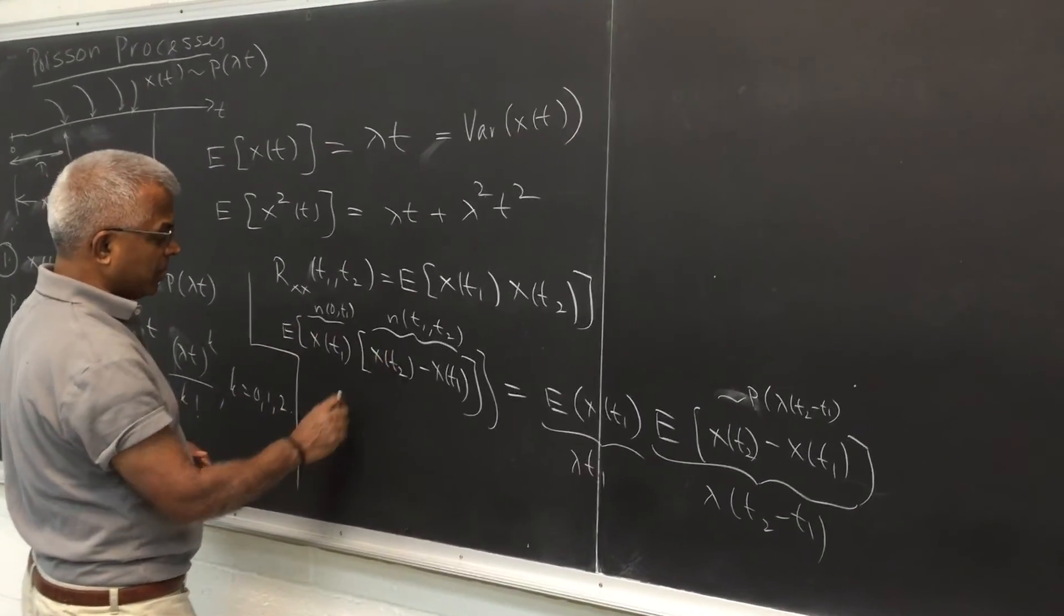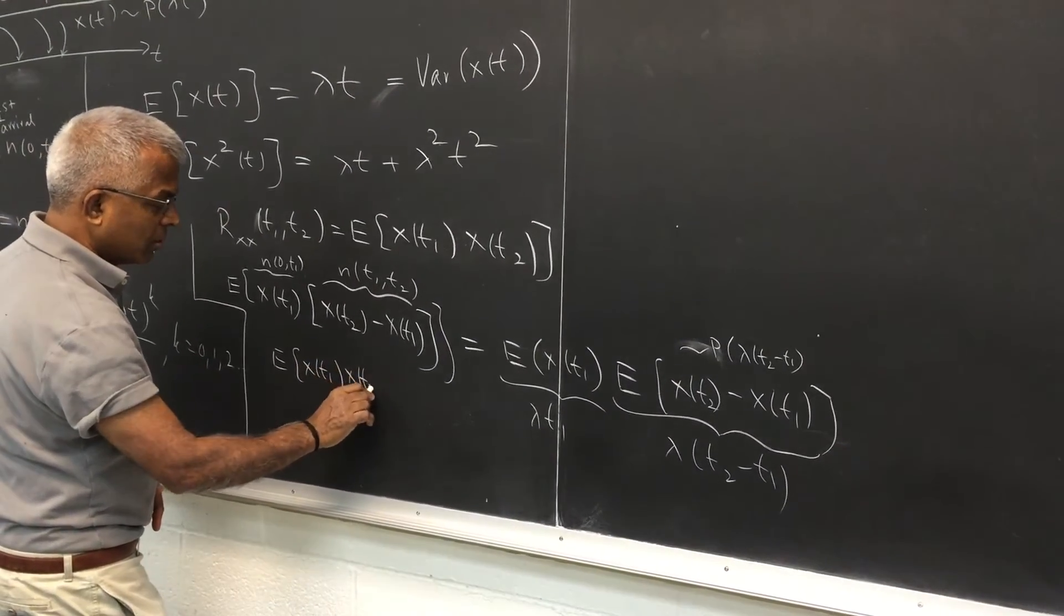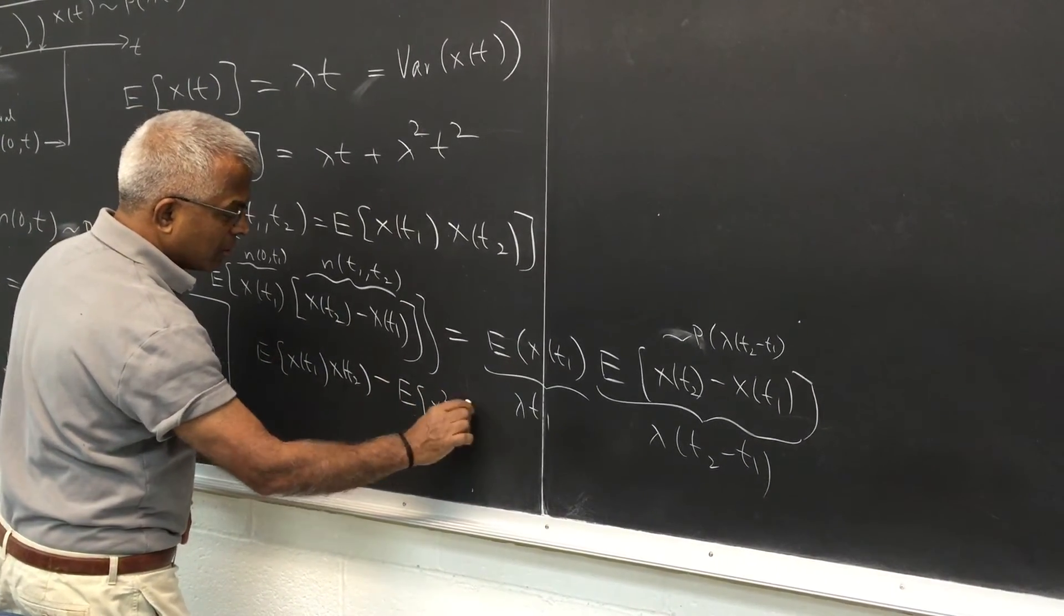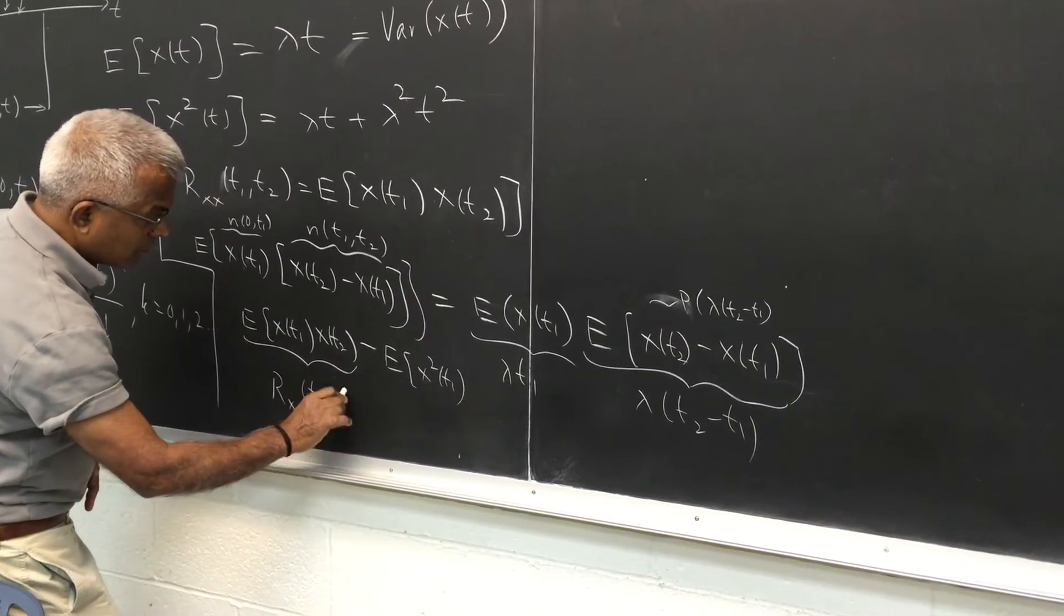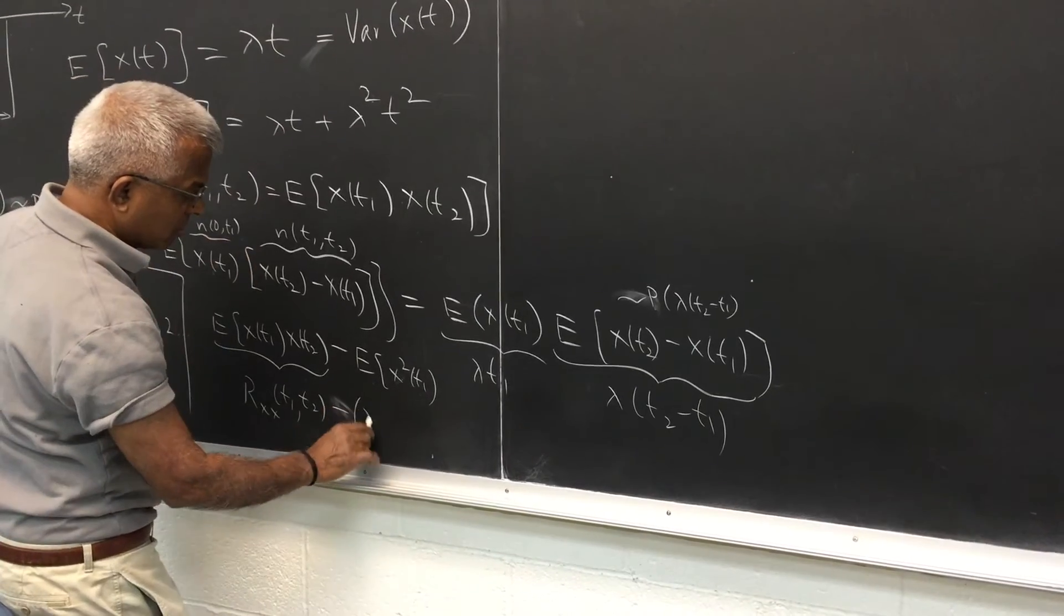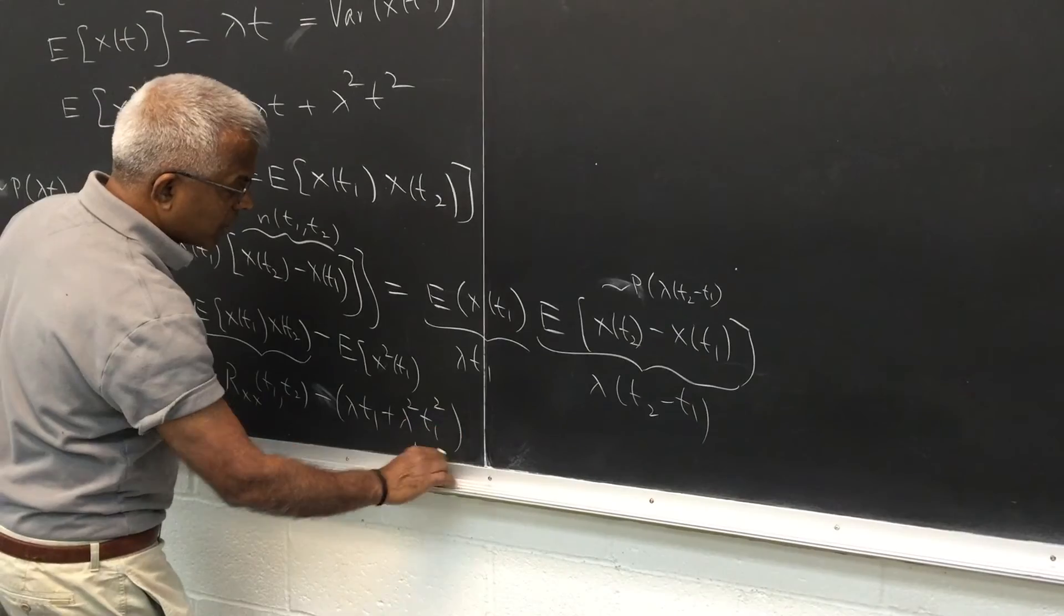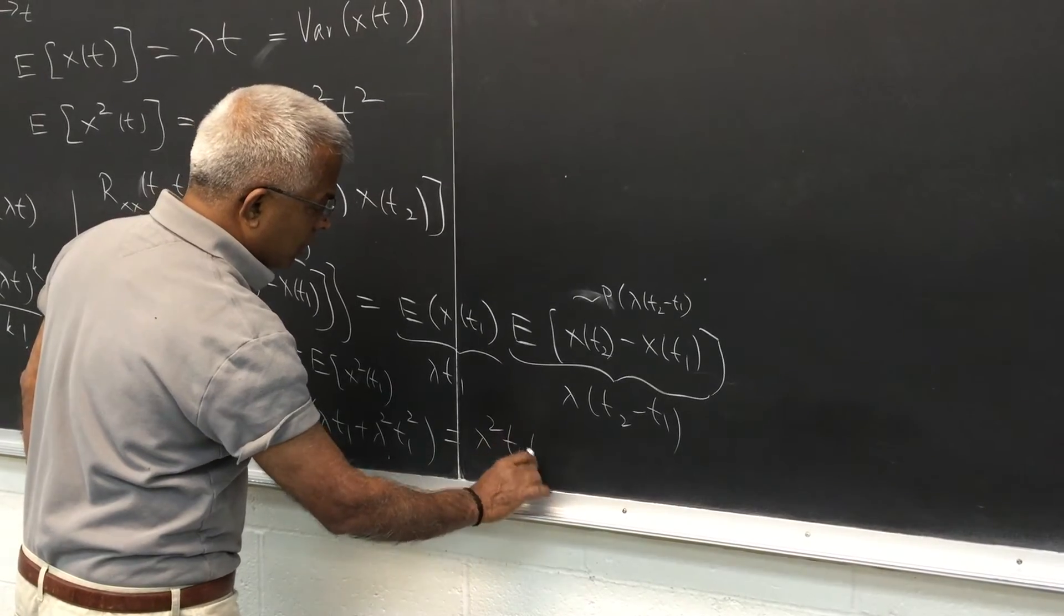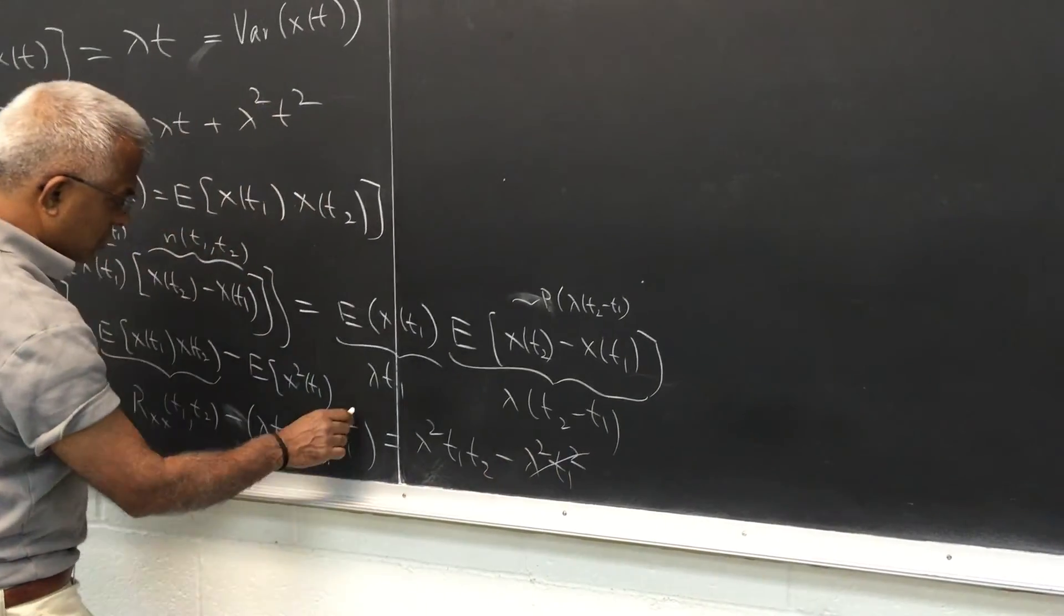On the other hand, you can also expand this multiplied by this, which is expected value of Xt1, Xt2 minus expected value of X squared t1. So this is what we are looking for. So this is Rxx minus expected value of X squared is here. So that's minus lambda t1 plus lambda squared t1 squared equal to from here lambda squared t1 t2 minus lambda squared t1 squared.